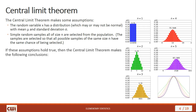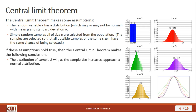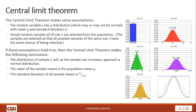With these assumptions in place, and if they are true, then the Central Limit Theorem makes the following conclusions. First, we can conclude that the distribution of sample x-bar values will, as the sample size increases, approach a normal distribution. We can also conclude that the mean of those sample means is the population mean, mu. We can also conclude that the standard deviation of all sample means is sigma divided by the square root of the sample size. This gives us a better estimator of the population standard deviation.